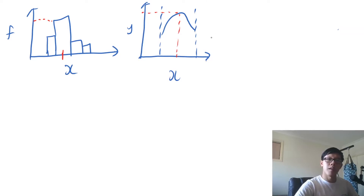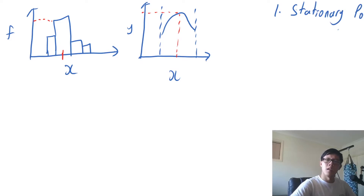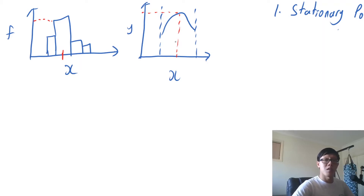So there are kind of three things we need to check whenever we want to find the mode. Number one, and it's the most obvious one, are the stationary points. Because if we have a local maximum, there's a decent chance that the global maximum will also be there, as that's quite often the case.